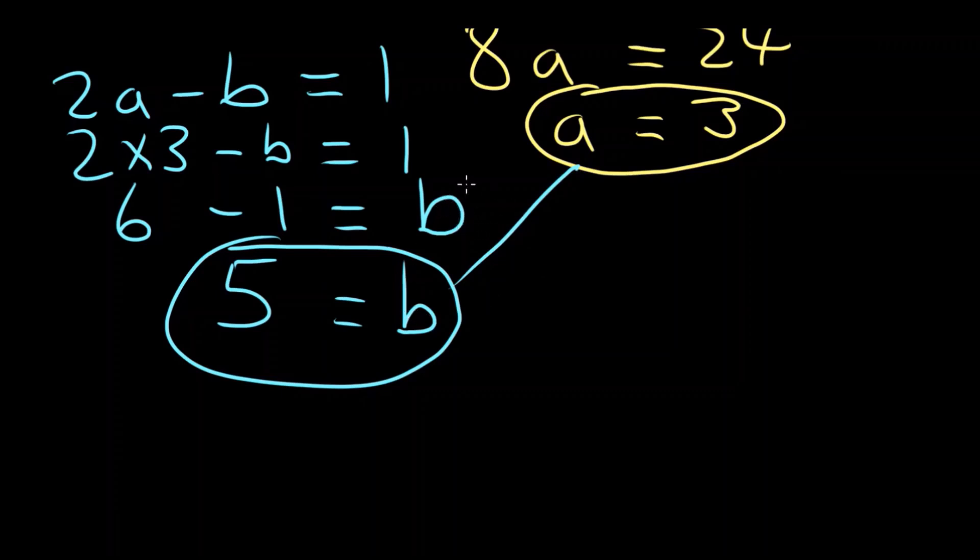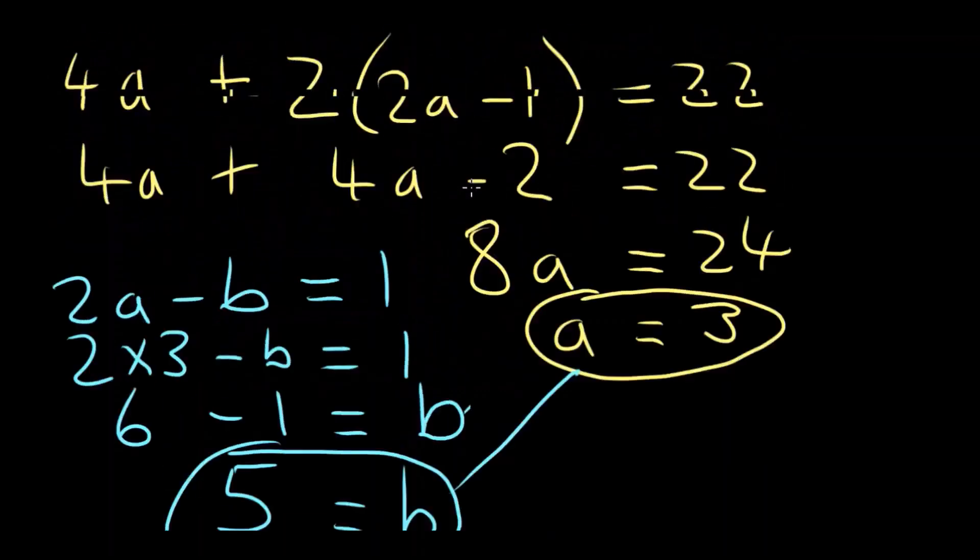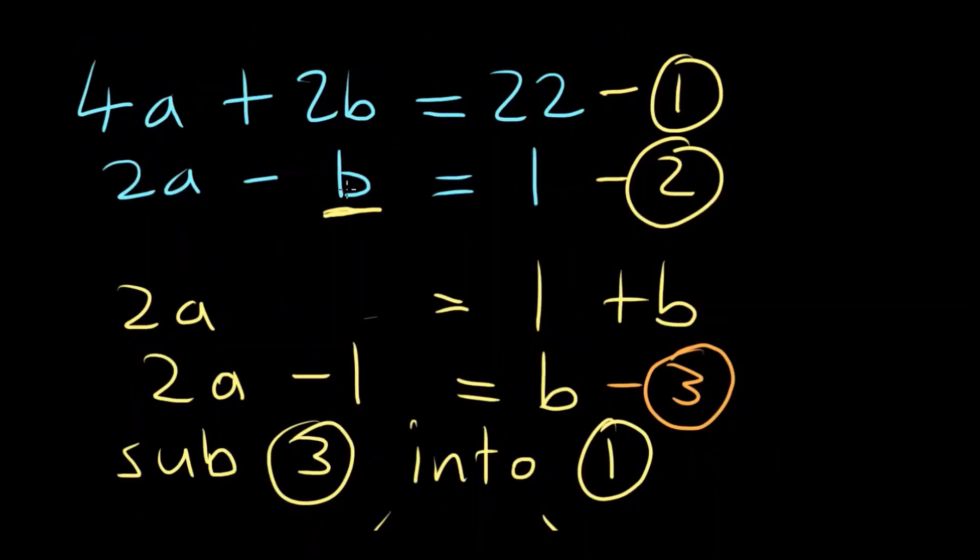Good thing is you can go ahead and check that. So if a equals 3 and b equals 5, 4 times 3 is 12, plus 2 times 5 is 10. 12 plus 10 is 22. That's correct. 2 times a is 6 minus 5 equals 1. Correct. Yes, so with algebra you can almost always check your answer.